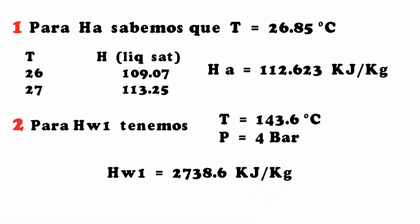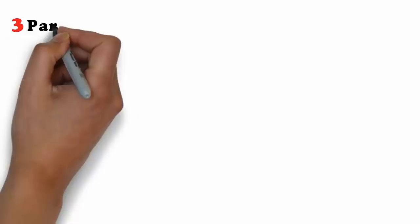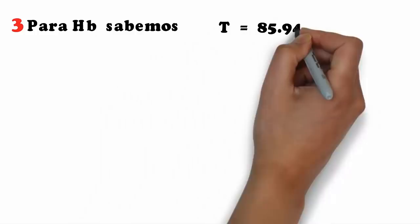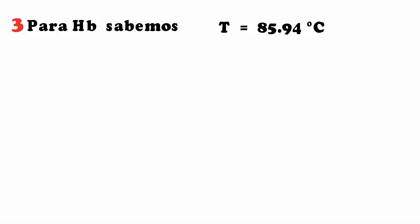To calculate HB (liquid), we know that stream B has a temperature of 85.94°C, the same as that inside the evaporator. We substitute this temperature into the enthalpy formula: H = Cp·ΔT, where Cp for water is 4.18 kJ/(kg·°C).